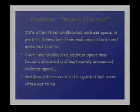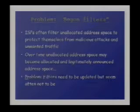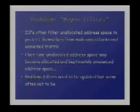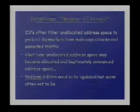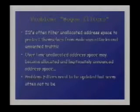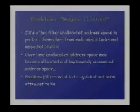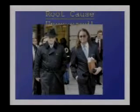Over time, this unallocated address space may become allocated — given down from the IANA to the registries, used, announced, etc. — and then we see all the whining on the NANOG list saying, 'I've just been assigned 96, 38, 266, 42, and I can't get to X.' The problem is the filters need to be updated, but they often are not. You think you know why, but there's a hidden secret here.